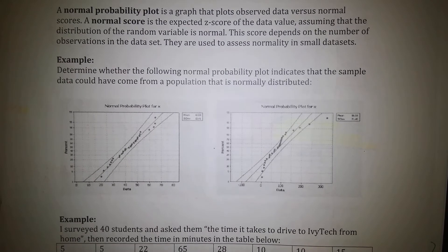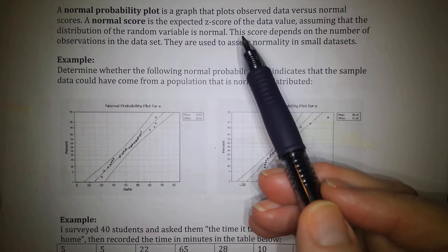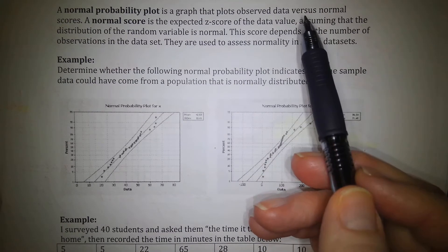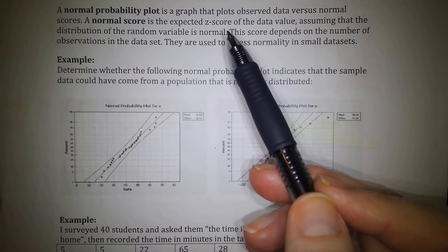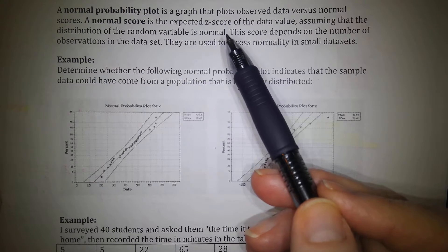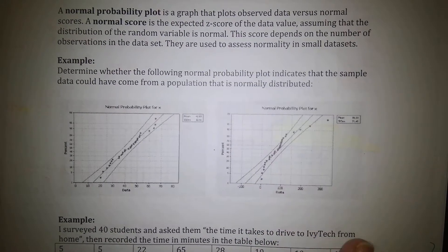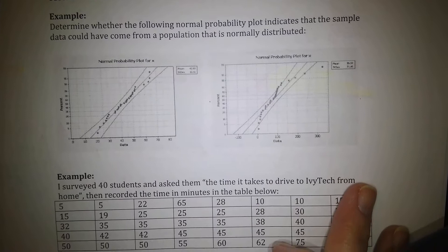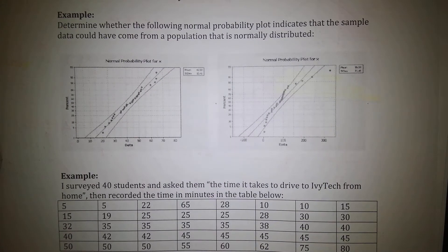A way to do that is using what's called a normal probability plot, which is a graph that plots the observed data versus the normal scores. A normal score is the expected z-score of the data value assuming that the distribution of the random variable is normal. The score depends on the number of observations in the set when they are used to assess normality. For example, determine whether the following normal probability plot indicates that the sample could have come from a distribution that is normally distributed.